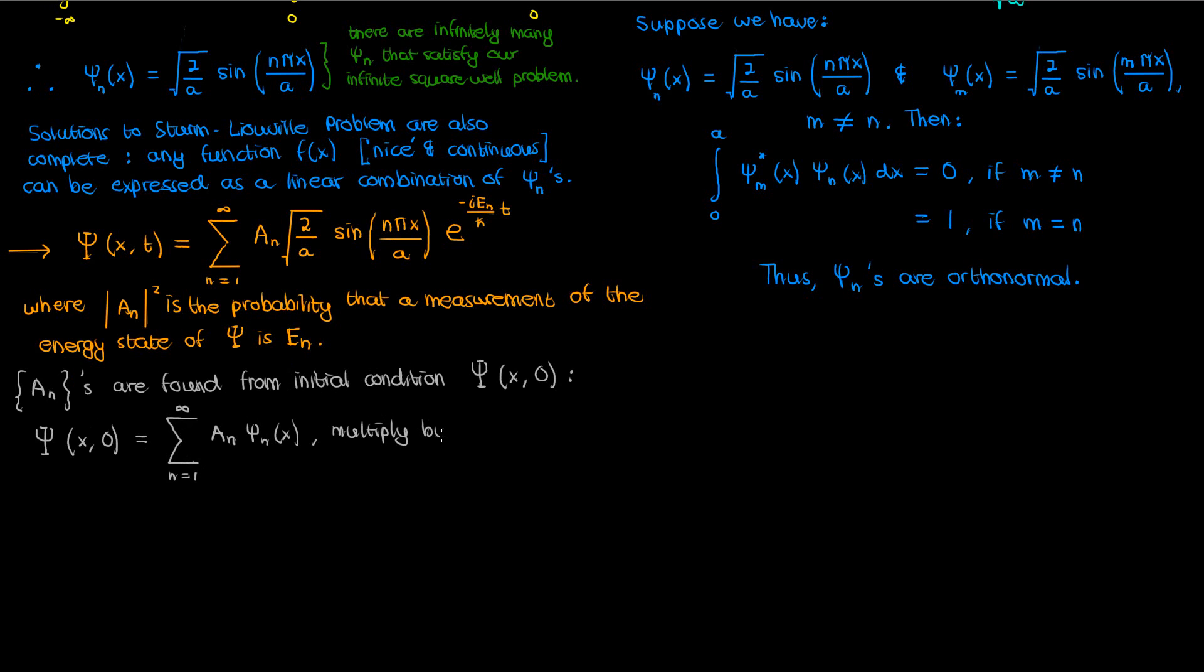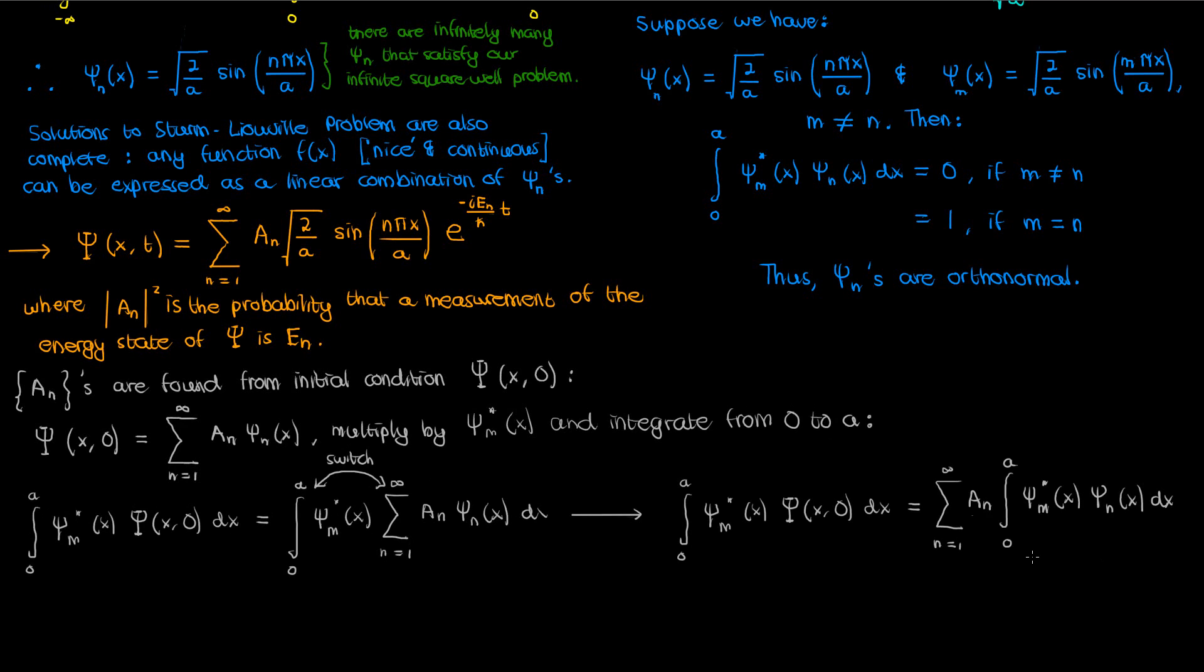Let's now multiply both sides by the conjugate of psi sub m, which is another indexed small psi solution, and integrate both sides from 0 to A. Since the integral of the sum of multiple functions is the sum of the integrals, we can switch the order of the integration and summation on the right, in which case our expression simplifies to the following.